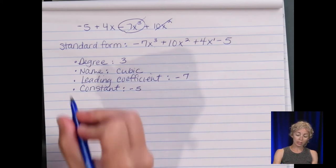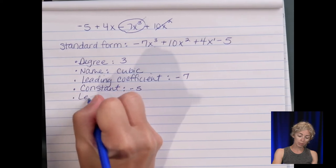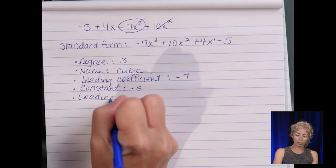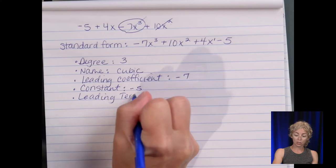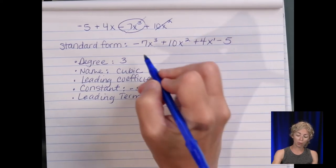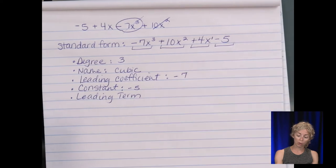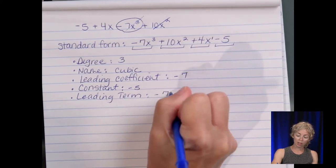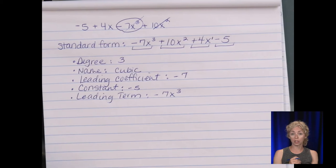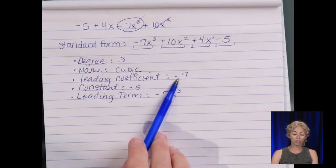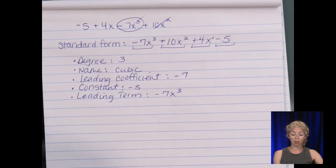And our leading term. Last for vocab. The leading term. So as we said before, there are four terms. So one, two, three, four. So the leading term is the negative seven x to the third. It's the whole term. But the leading coefficient is just the number.